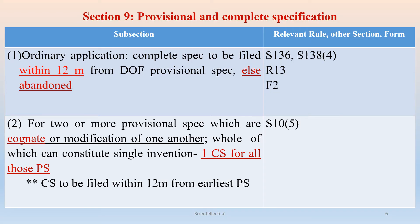Section 9: Provisional and Complete Specification. Subsection 1: In case of an ordinary application — that is, not a PCT or Convention application — a complete specification is to be filed within 12 months from the date of filing of the provisional specification, or else the application will be considered as abandoned. The relevant rule is Rule 13, and the form in which the complete specification needs to be filed is Form 2. Other related sections are Section 136 and Section 138.